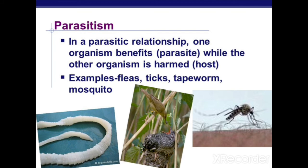Some parasites are ectoparasites and some are endoparasites. Ectoparasites attack from outside the body of the organism, while endoparasites live inside the body and cause harm from within — like tapeworms and roundworms. Bacteria inside our body can cause diseases like cholera, typhoid, and tuberculosis — so bacteria are endoparasites. Similarly, children's intestines can be infected by tapeworms and earthworms when they play in soil.